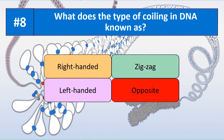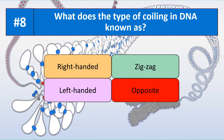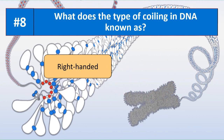Question number eight: what is the type of coiling in DNA known as? Is it right-handed, zigzag, left-handed, or opposite? The correct answer is right-handed — the type of coiling in DNA is known as right-handed.